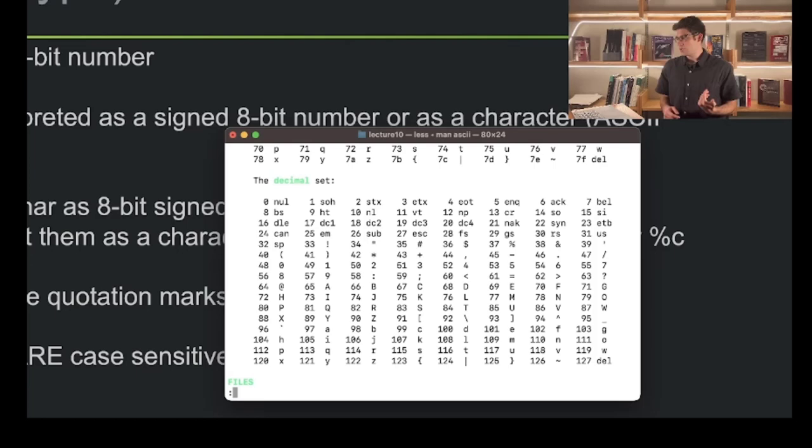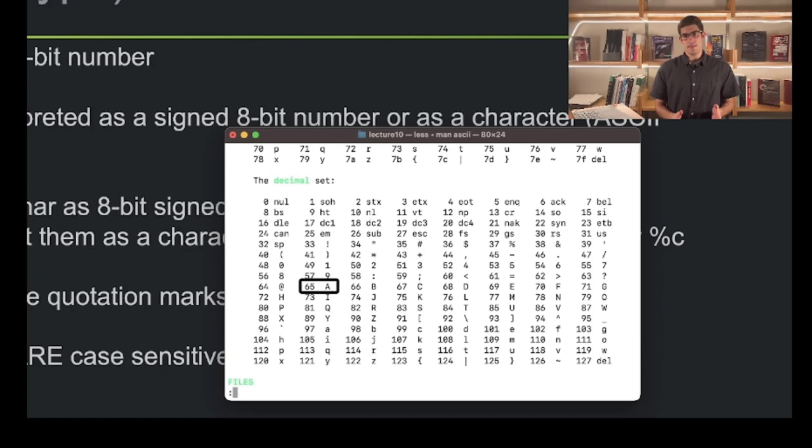As we can see, there is a one-to-one mapping between a number between 0 and 127 and a character. If we look at number 65, we should see that this corresponds to the capital letter A. We can interpret the char as an eight-bit signed integer by using the %hhd conversion specifier, or we can interpret the char value as a character by using the %c conversion specifier.